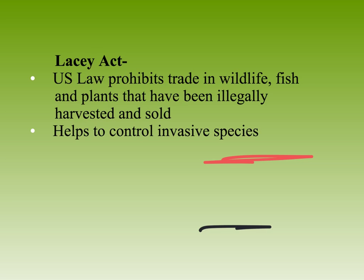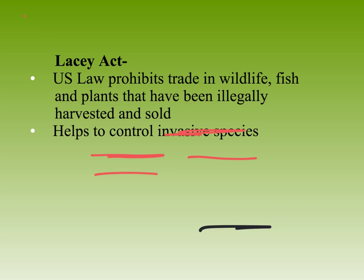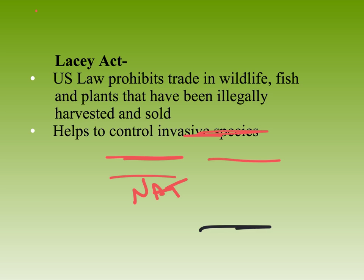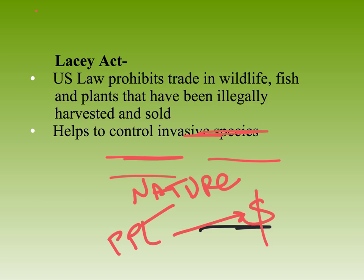This brings us to a key tension: slowing development versus the economy. Conservation today looks for a trifecta — nature, people, and economy all working together. We want nature protected, we want people to benefit from it, and we want the economy to benefit too. If you can get all three working together, that's the ideal outcome.